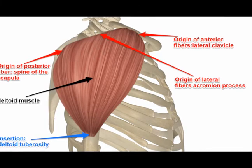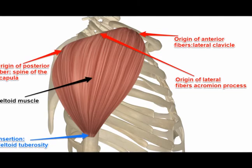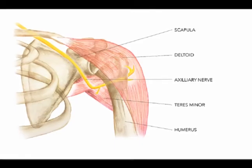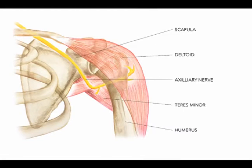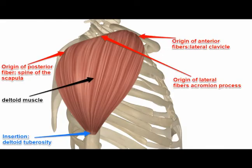The insertion of the deltoid muscle — all three heads — inserts into the deltoid tuberosity. The deltoid is innervated by the axillary nerve from vertebral levels C5 and C6.